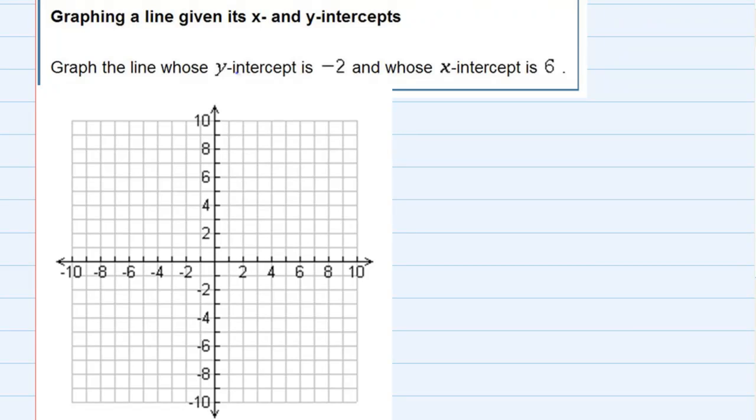Graphing a line giving its x and y intercepts. Here we're told to graph a line where the y-intercept is negative 2 and the x-intercept is positive 6.